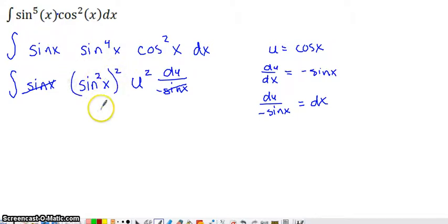Why is it beneficial to rewrite sine to the fourth with a sine of x squared? Well, if we think about a trig identity, the Pythagorean identity, it says this. I can replace the sine squared with one minus this cosine squared.